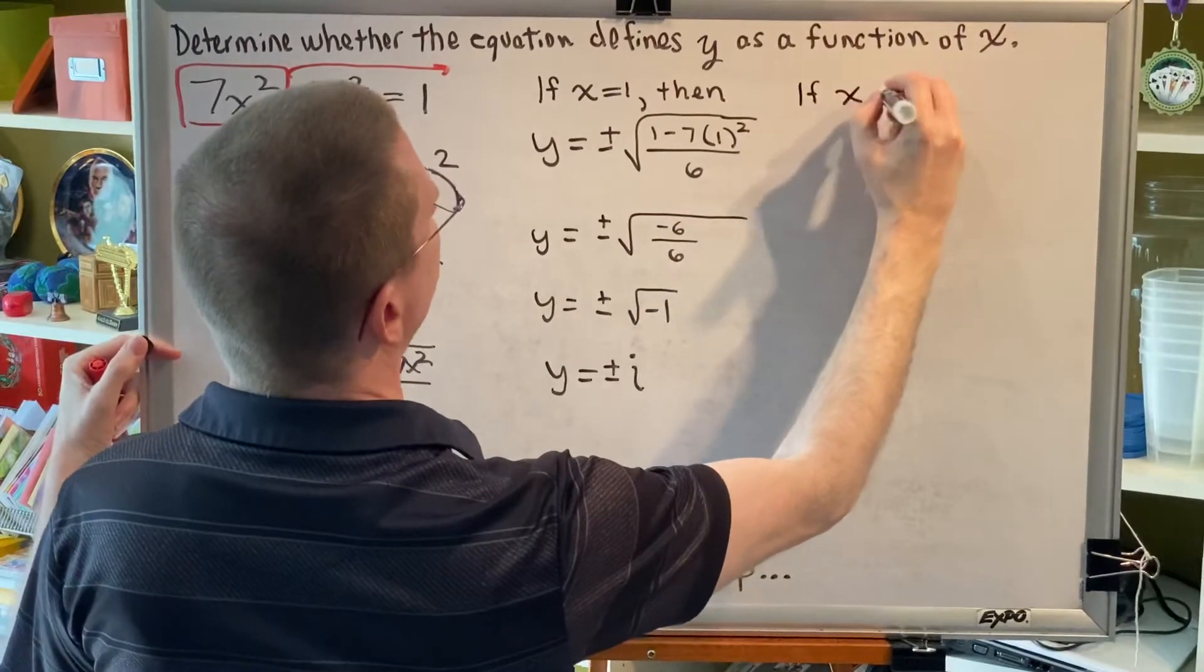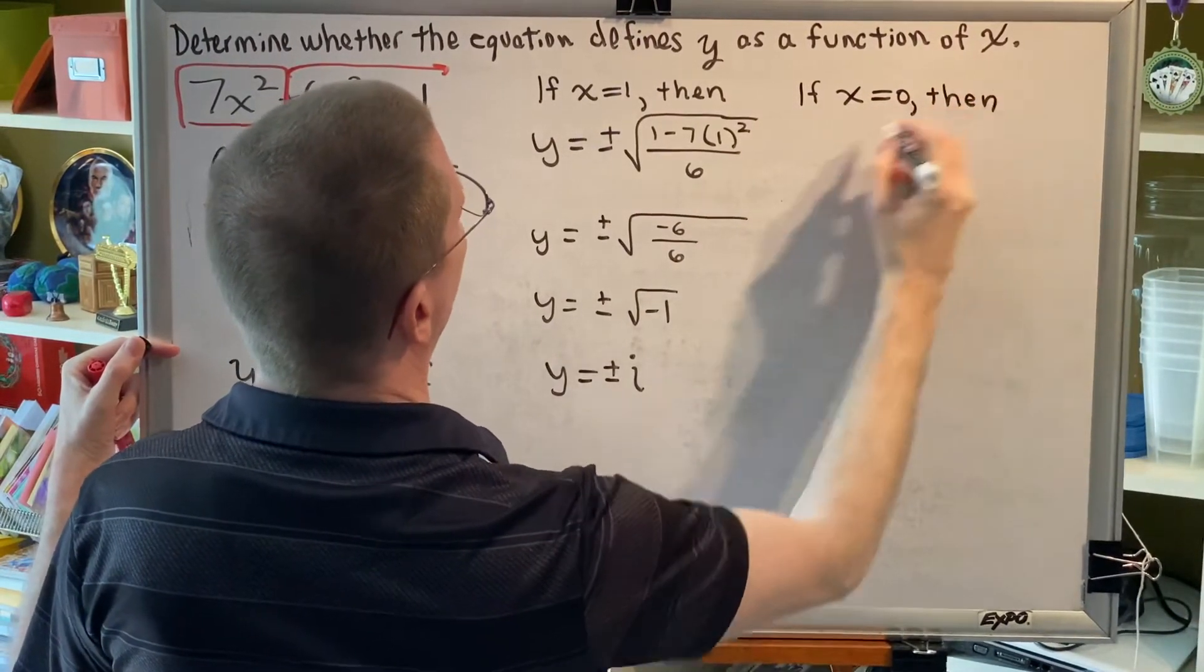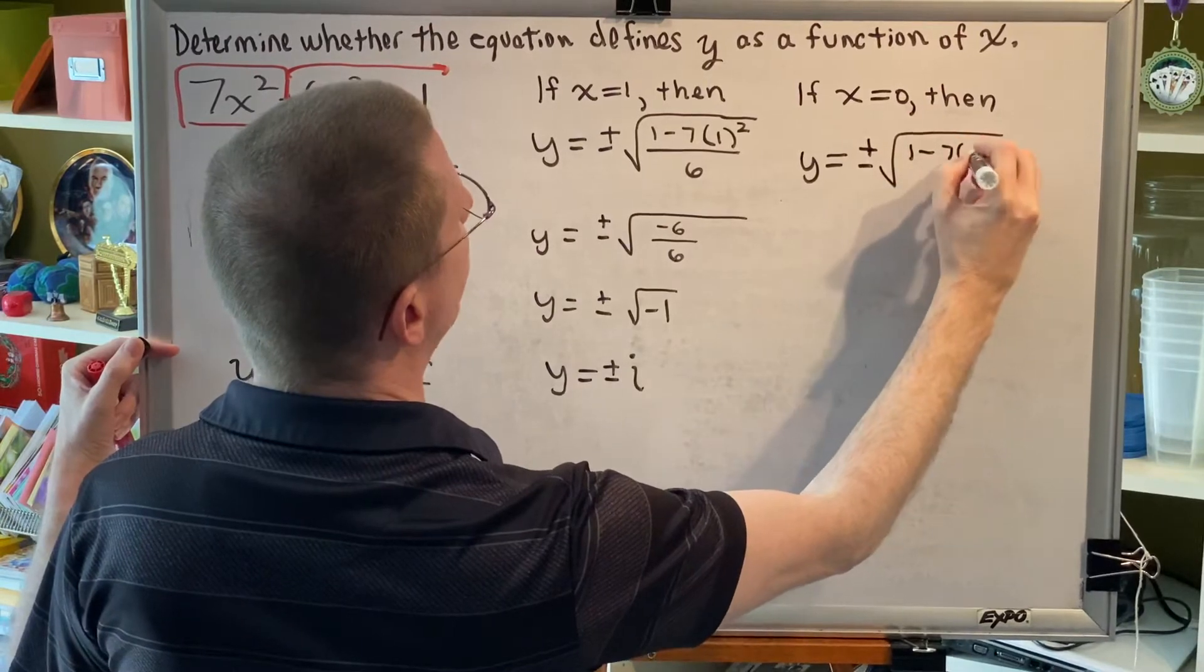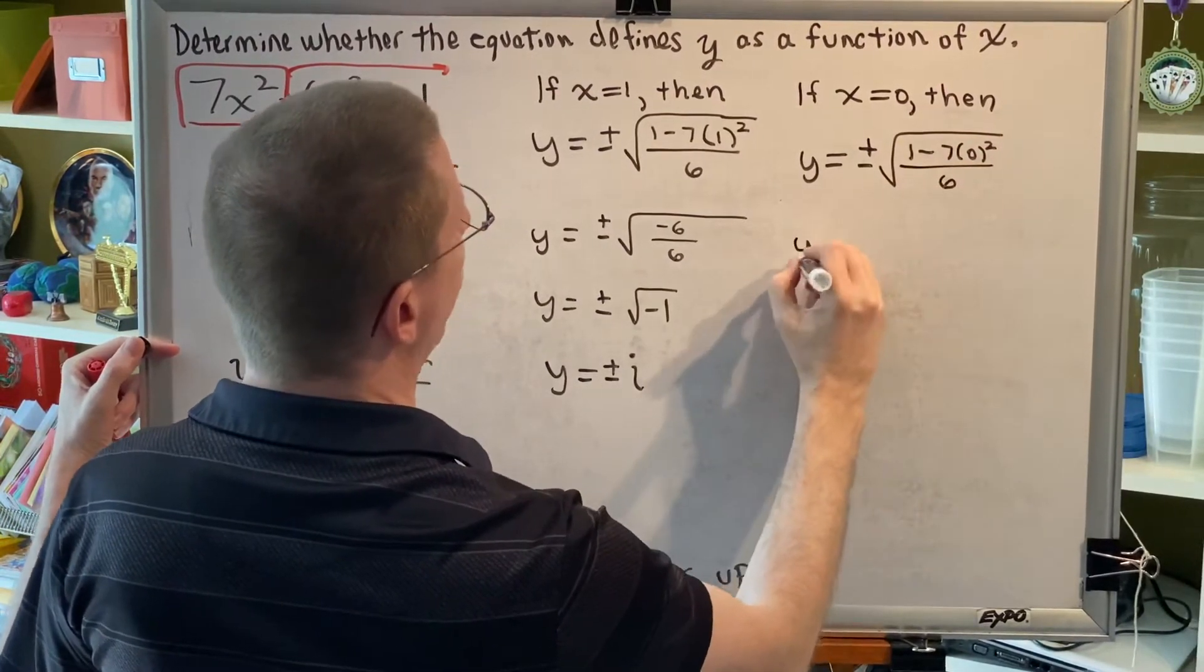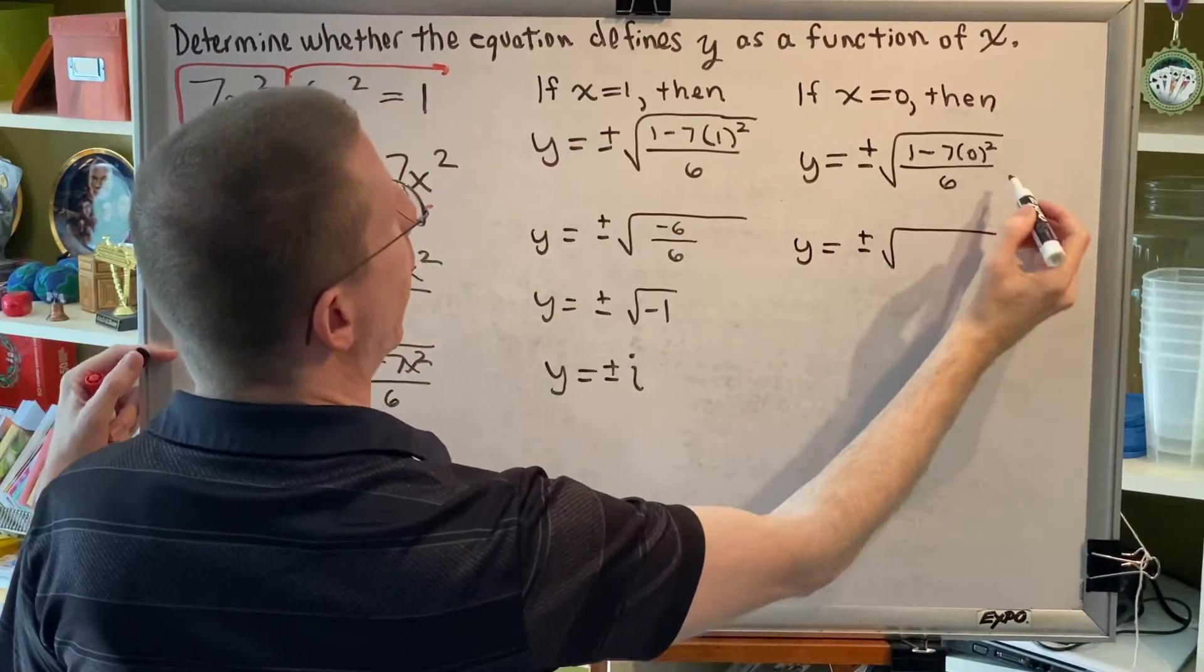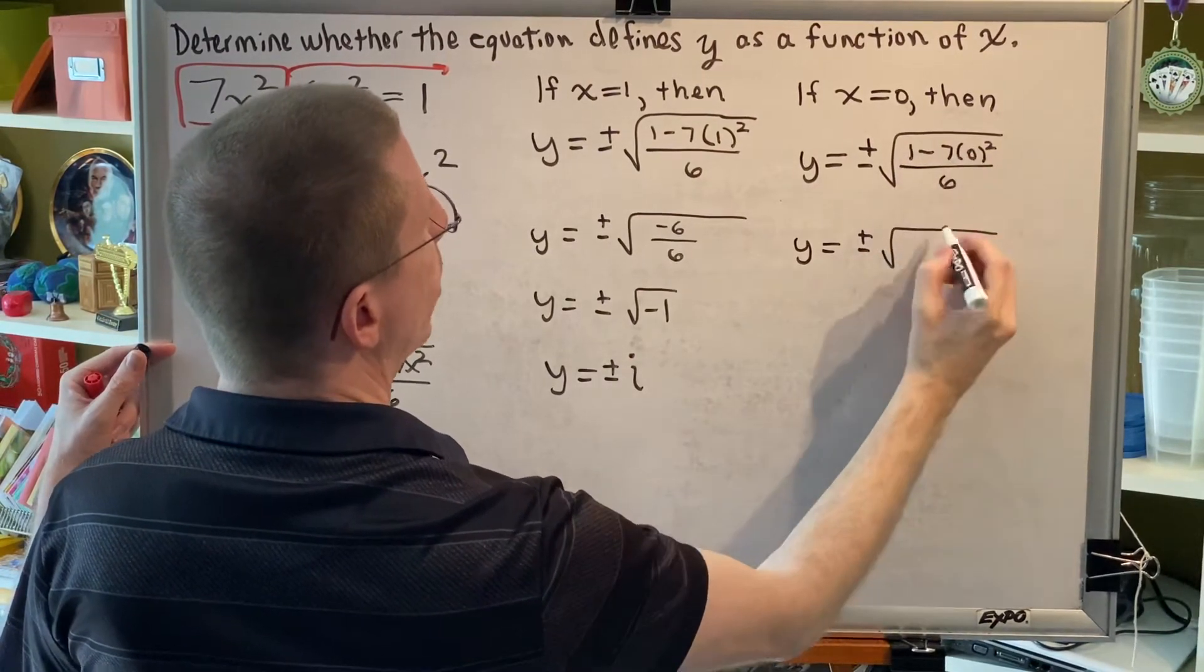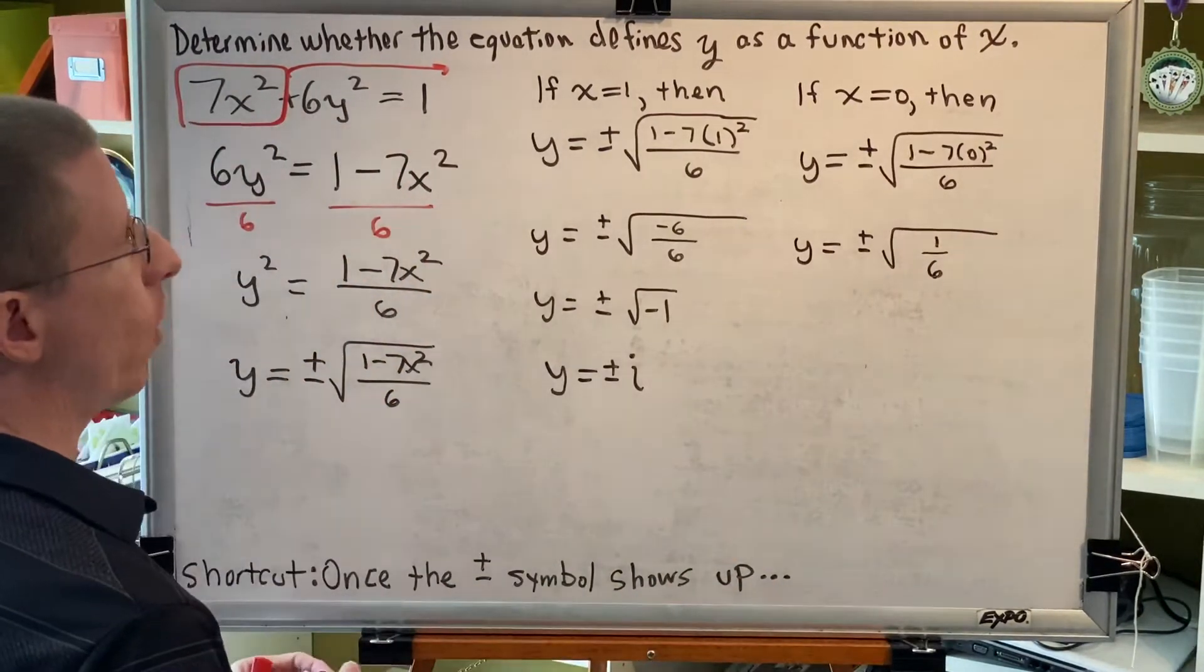Let's try another number. How about if x = 0? Let's see what happens. Then y would be ±√[(1 - 7(0)²)/6]. And we will once again follow order of operations, starting with 0². 0² is 0, times 7 is 0, and 1 minus 0 is 1. So, we get y = ±√(1/6).